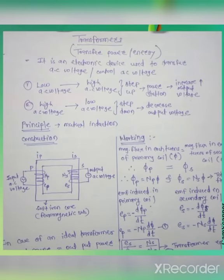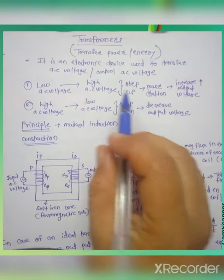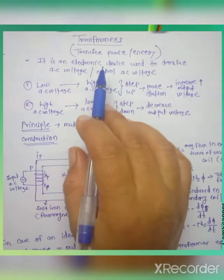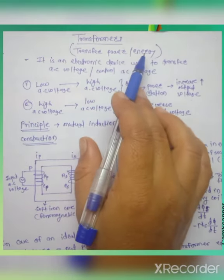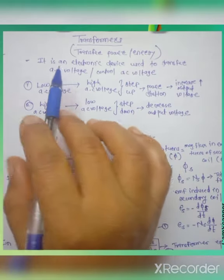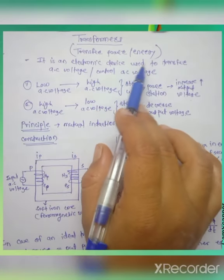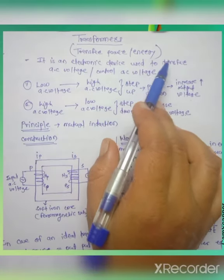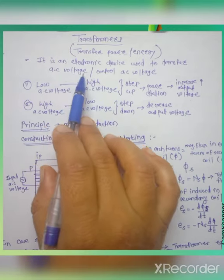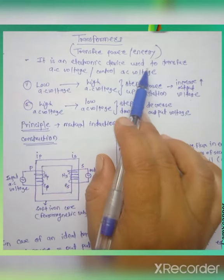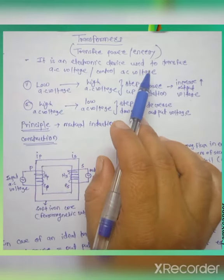Hello friends, myself Rashmi. We are going to learn about the transformer in the topic of electromagnetic induction. Transformer means transfer power or energy. That is, transformer is an electronic device used to transfer AC voltage or control AC voltage. There are two types of transformer.